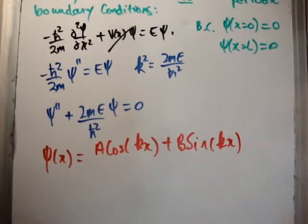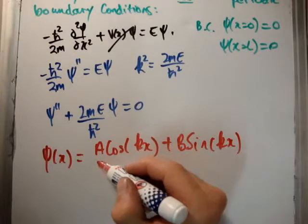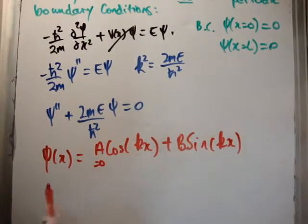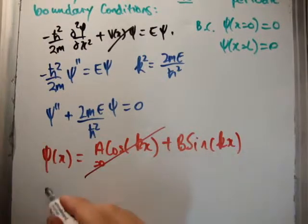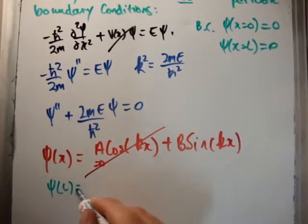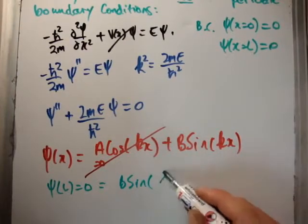So if we apply our boundary conditions applying x equals 0, we find that A must be equal to 0. That means psi must be equal to B sin kx. Next we apply that psi of L equals 0 is equal to B sin kL.